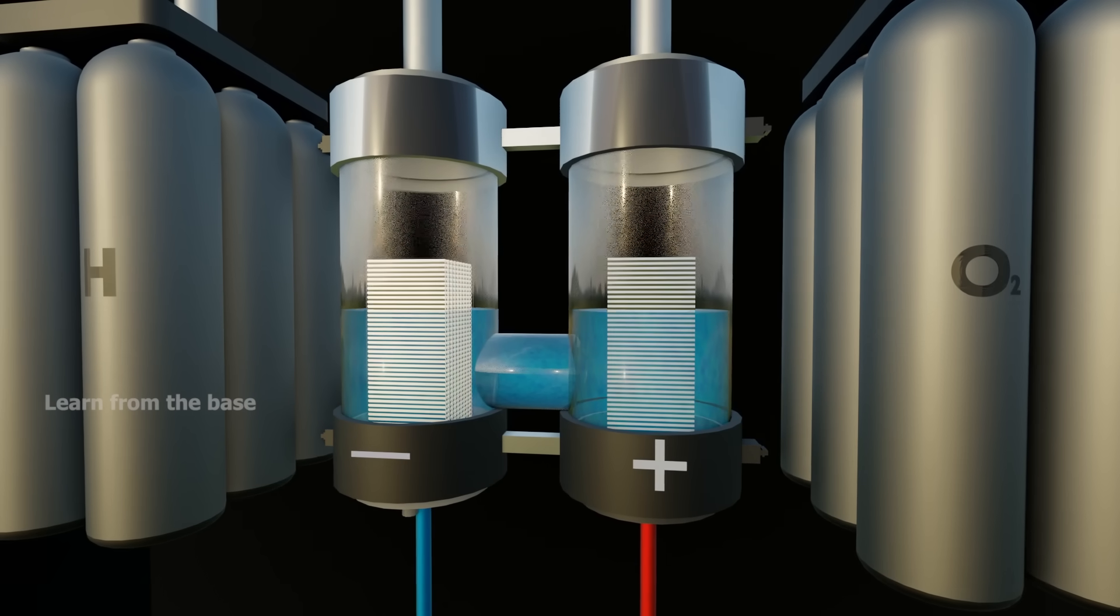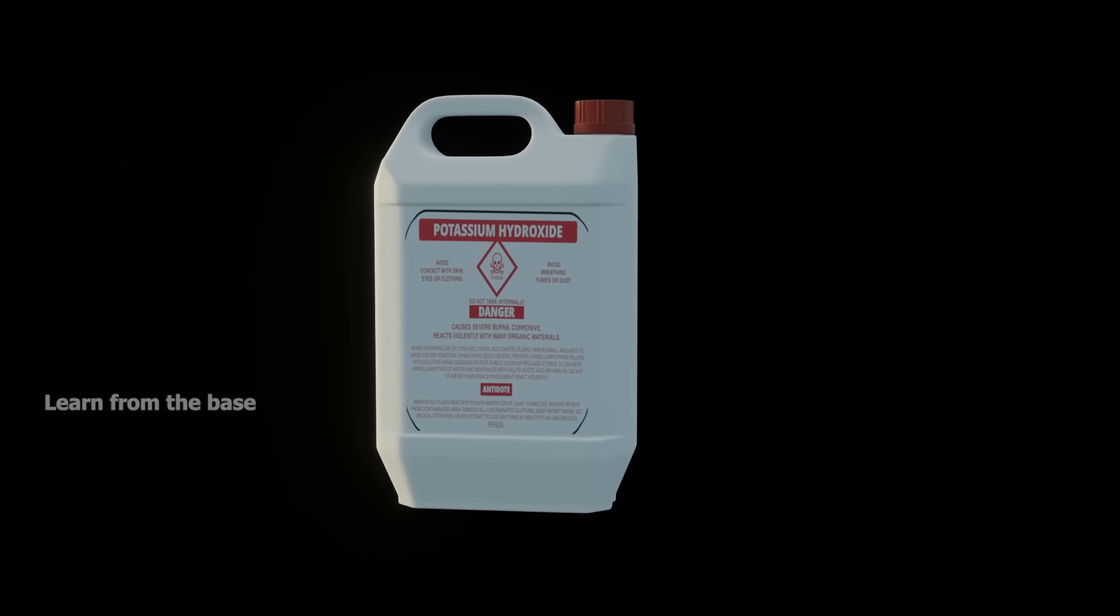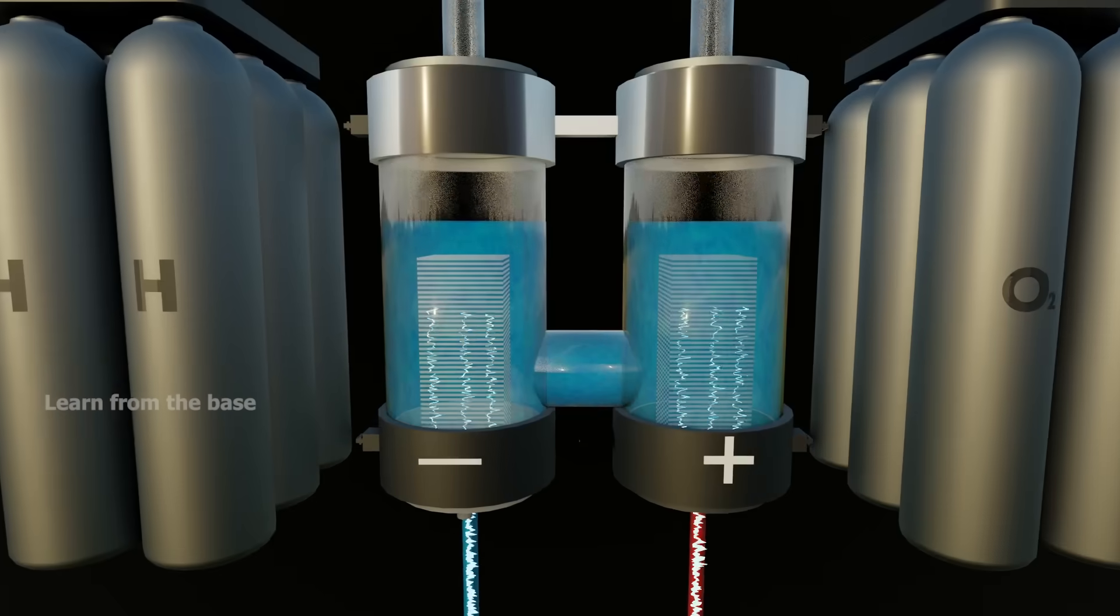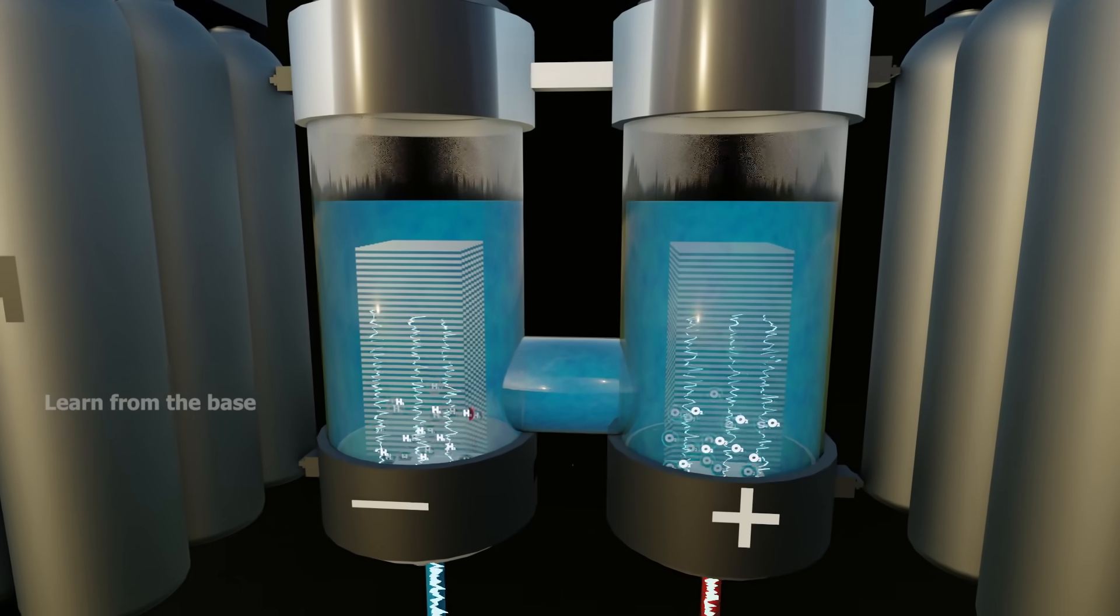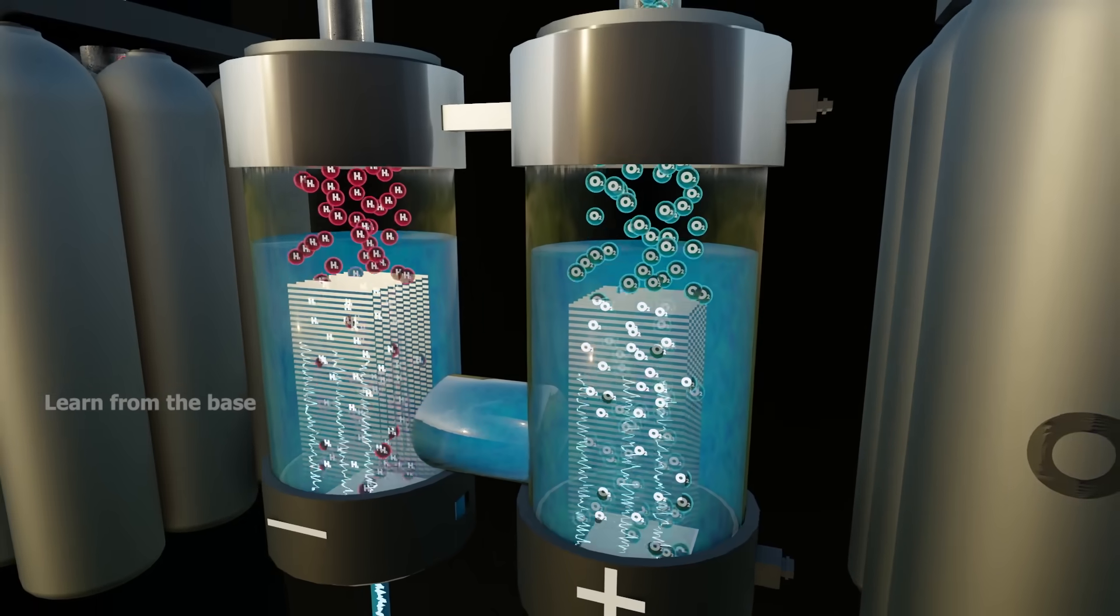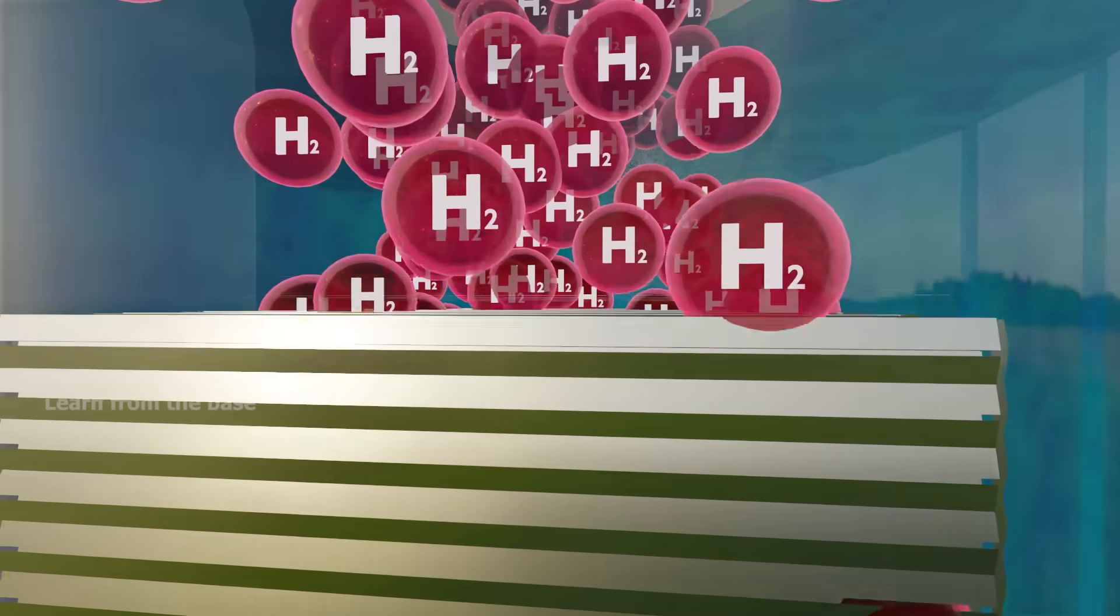These electrodes are immersed in purified seawater, and a chemical called potassium hydroxide is added. Then electricity is transmitted to these electrodes. The water is separated into hydrogen and oxygen gases. The positive electrode gives off oxygen, and the negative electrode gives off hydrogen.